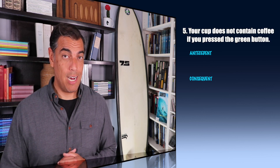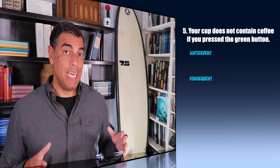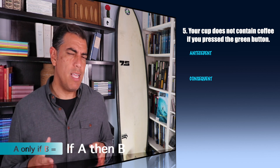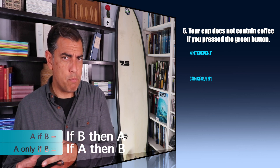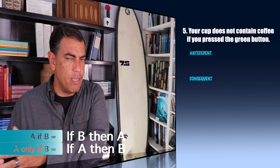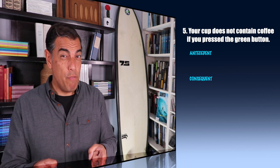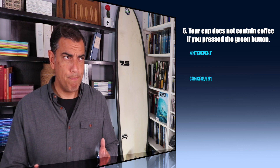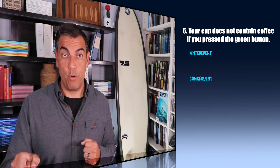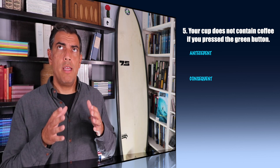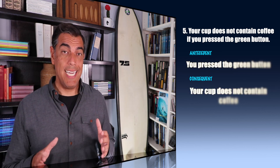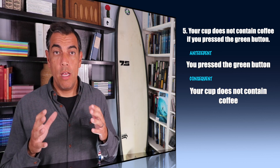Number five: your cup does not contain coffee if you press the green button. I talked about the difference between A only if B and A if B. Saying A if B is pretty much just shifting it from the front to the back — you'd say if B then A, or just A if B. But let's figure out what makes sense here. Are we saying that if your cup doesn't contain coffee, then you pressed the green button? That doesn't seem to make sense — maybe you pressed the blue button or something. But what about: if you press the green button, then your cup does not contain coffee? Yeah, that seems right. So the antecedent is 'you press the green button,' the consequent is 'your cup does not contain coffee.'